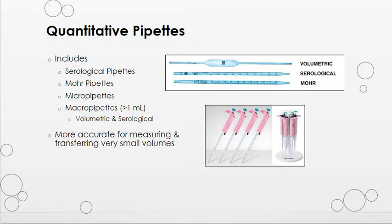Quantitative pipettes are more accurate for measuring and transferring very small volumes. Micropipettes are common in the lab and are considered quantitative. Serological and Mohr pipettes as well as macropipettes are also quantitative. The difference between serological and Mohr pipettes is that serological pipettes have measurement markings all the way down near the tip, while Mohr pipettes do not have markings near the tip and are used for point-to-point measuring. Serological pipettes should be measured from the tip. Macropipettes are used to measure anything greater than one milliliter, including both volumetric and serological pipettes. Volumetric pipettes are calibrated to measure one volume only, while serological pipettes can be used to measure different volumes with the same pipette.